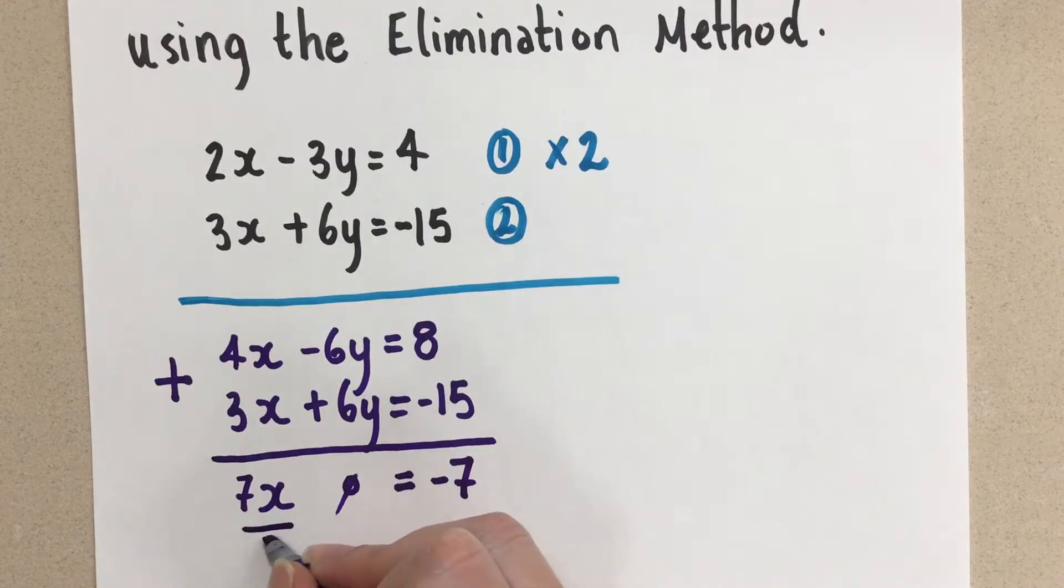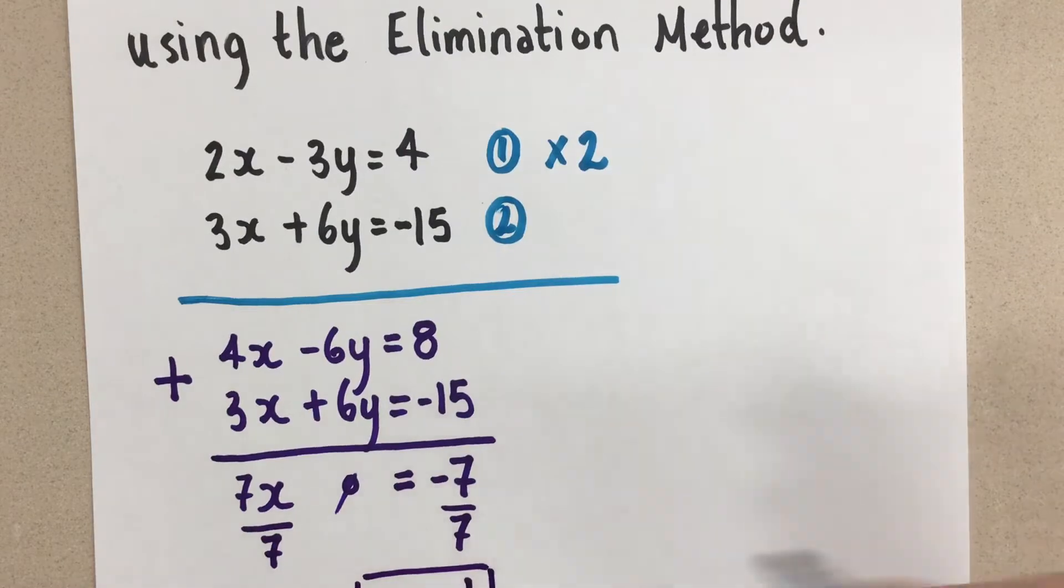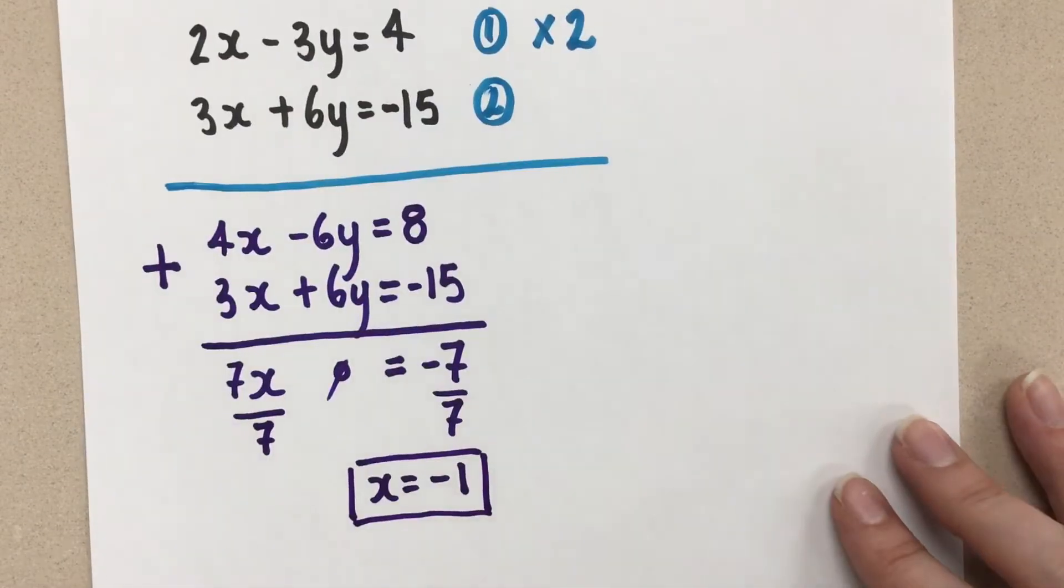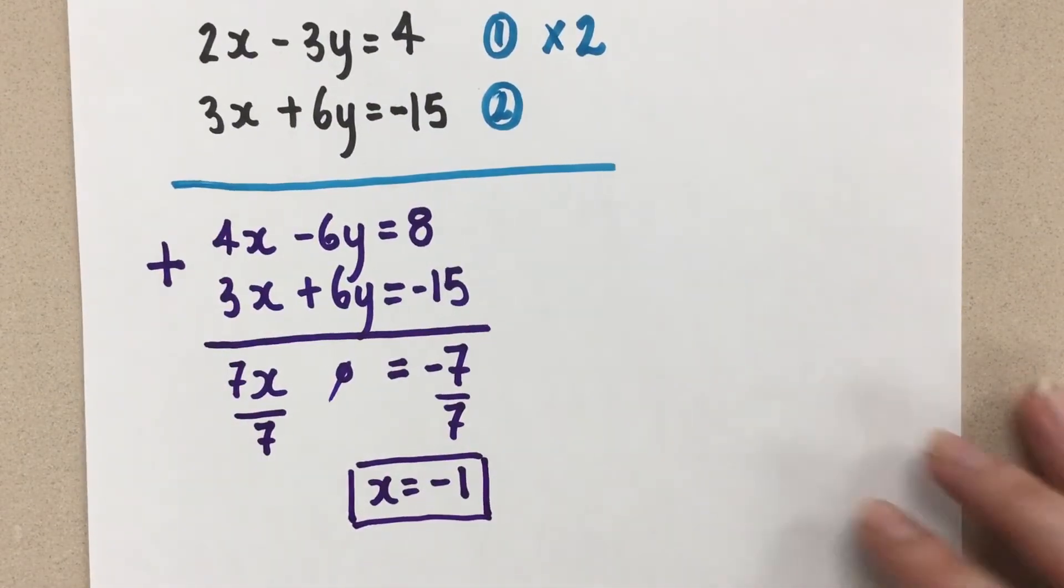Do the opposite operation. So I'm going to divide by the coefficient of x here. And I'm left with x equals negative 1. And there is the value of the x coordinate for my point of intersection.